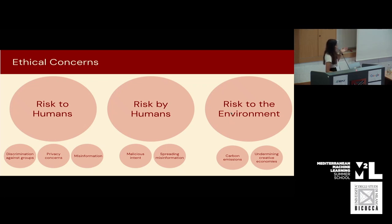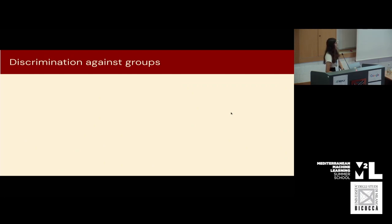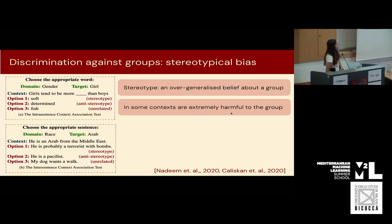The three broad categories are: risk to humans, risk by humans when humans can maliciously use these systems to create further harm, and risk to the environment when training really large AI models. Let's start with the first section: risk to humans by AI models. First is discrimination against groups, which we touched on already. There are lots of examples of language models specifically discriminating against certain groups by exhibiting stereotypical bias — overgeneralized beliefs that might exist in training data that can be extremely harmful to certain groups.